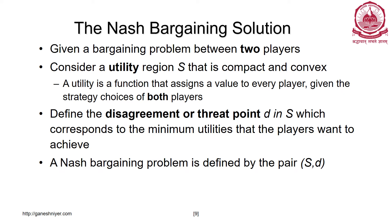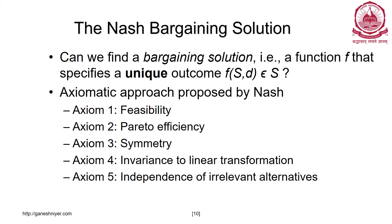We also have a disagreement point — below that, a player won't agree. For example, if a meal costs $5, any amount less than $5 is the disagreement point for the poor guy. So the Nash bargaining problem is defined by the pair: the utility region S and the disagreement point. The axioms proposed by John Nash are: feasibility, Pareto efficiency, symmetry, invariance to linear transformation, and independence of irrelevant alternatives.